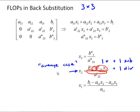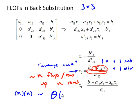So, roughly, average case we have approximately n flops per row and then we're going to go up, since this is back substitution, n rows. So, n flops per row up n rows is going to give us n times n or order n squared for back substitution.